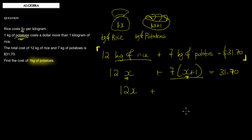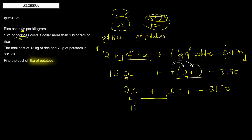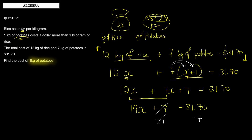So we have 12x, and then seven times (x plus one) — we expand the bracket: seven times x is 7x, and seven times one is 7. All of this equals $31.70. We see like terms 12x and 7x; combining those gives us 19x plus 7 equals $31.70. To get x by itself we need to get rid of the 7, so we subtract 7 from both sides.